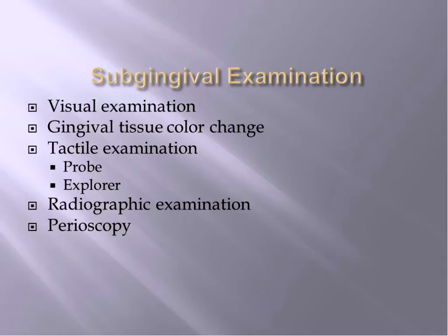Tactile examination is important — your first evidence of calculus might be when doing your periodontal assessment while probing. Sometimes you have to deflect the tip of the probe away from the tooth to get over the calculus ledge to get below it. For explorers, a fine subgingival explorer such as the ODU 11/12 is needed, adapted to the tooth surface. Each subgingival area needs to be examined carefully to the bottom of the pocket to ensure complete removal of calculus.